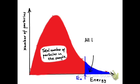Those particles represented by the blue shading — if they collide with correct orientation, we'll have a successful collision. So all of those particles have energy greater than or equal to activation energy, and hence will be able to react successfully should they collide with correct orientation. That's the basic premise of the Maxwell-Boltzmann distribution and how we can use it.